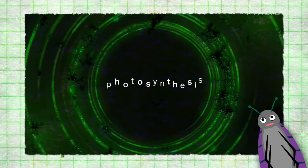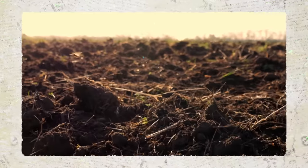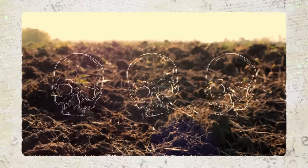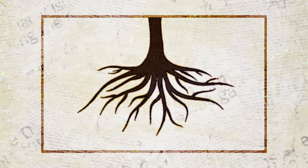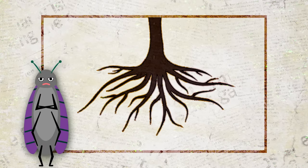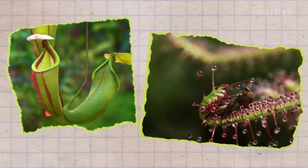So then, why bother with the bugs? Well, Venus flytraps live in acidic, waterlogged soil that doesn't have many nutrients. So instead of slurping up nitrogen and phosphorus through its roots, it needs to borrow some from the bugs.